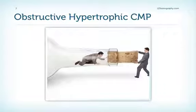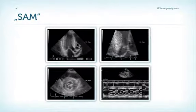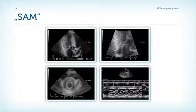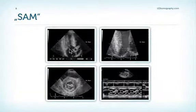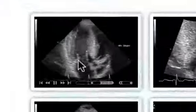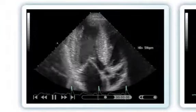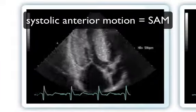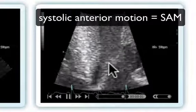Now let's look at the typical features of obstructive hypertrophic cardiomyopathy. In these 2D images, the patient first of all has massive left ventricular hypertrophy — again more of the septum than the remaining portions. But in addition, the patient also has a very abnormal motion of the mitral leaflet, in particular the anterior mitral leaflet. During systole, this leaflet is dragged towards the septum and thereby obstructs the LVOT. This motion is called systolic anterior motion, and it can be seen in the apical long axis view, where the obstruction by the anterior leaflet is very nicely visible.